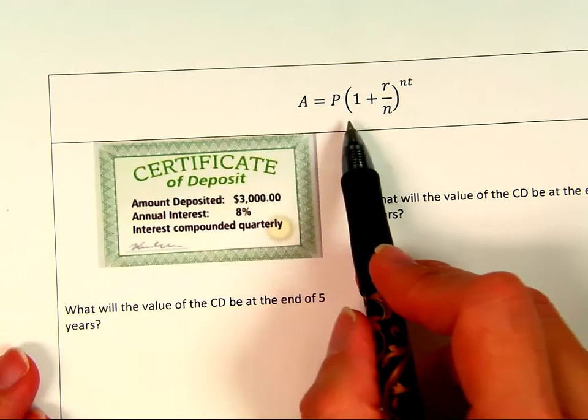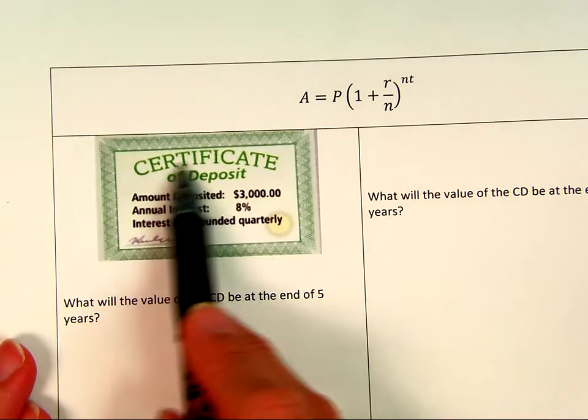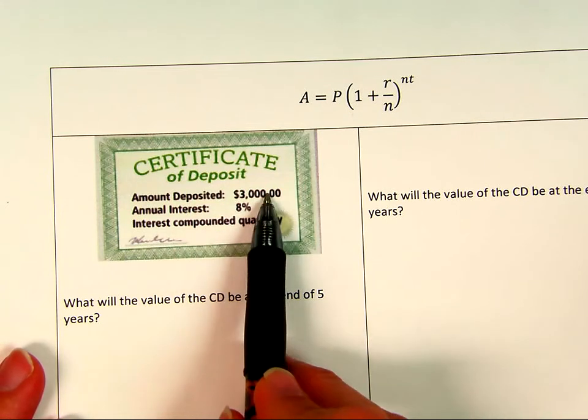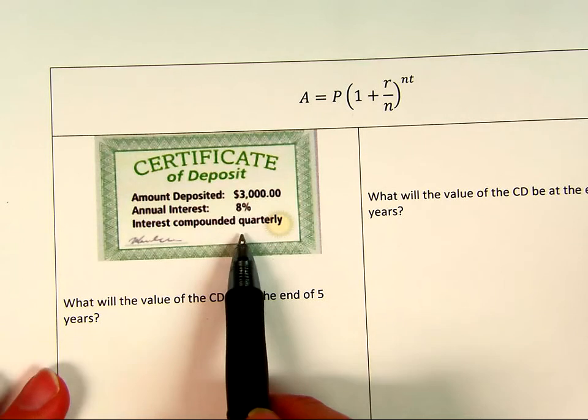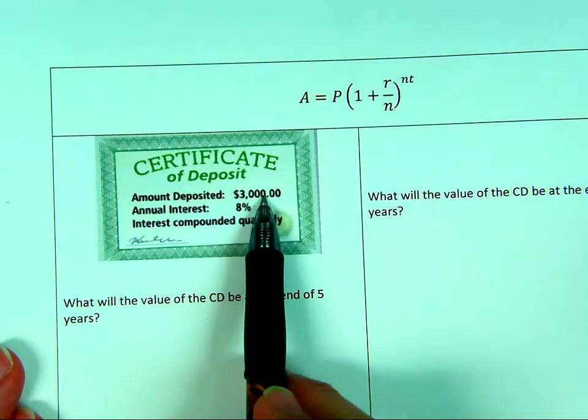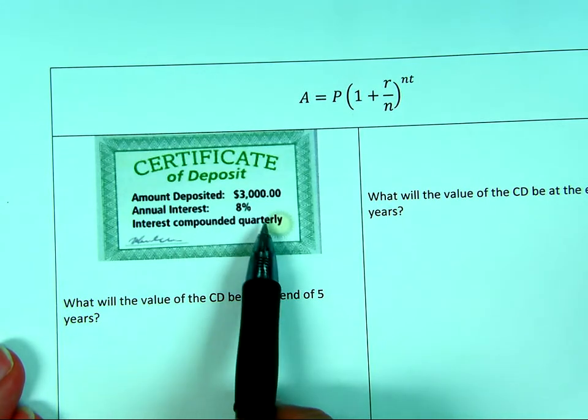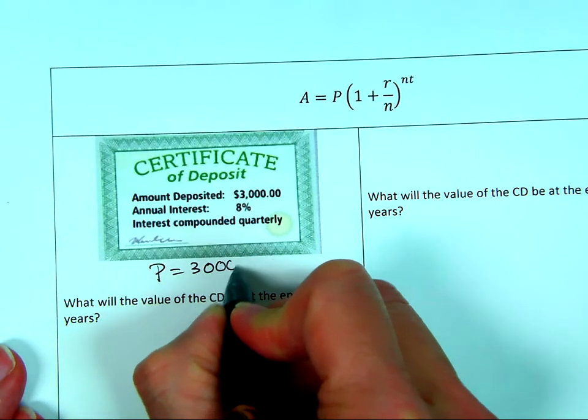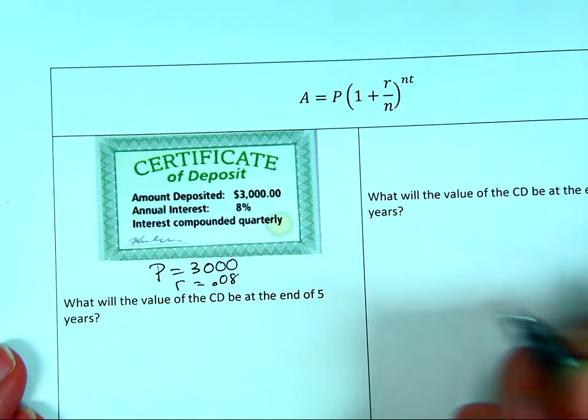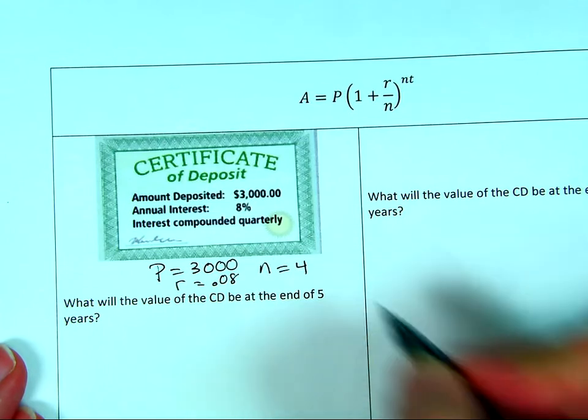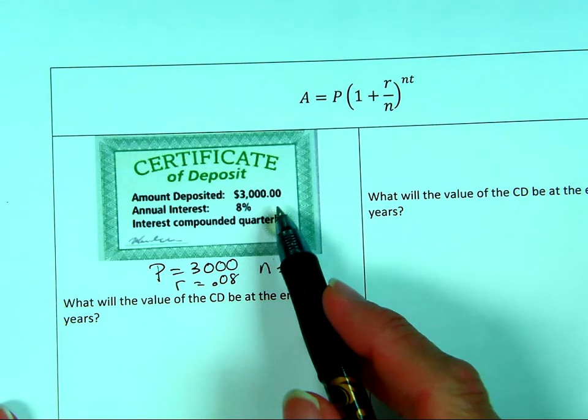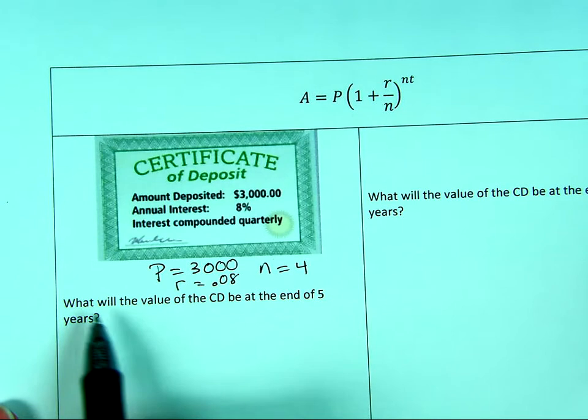Here is a certificate of deposit. For short, we call those CDs. I can go to a bank and purchase a CD, give them $3,000, they give me an interest rate, and I just leave it there for a certain number of years. We're going to initially invest $3,000 at 8% interest and compound it quarterly, which means four times a year. What do we know from this? Our principal is $3,000, our rate is 0.08, our n is four because quarterly means four times a year. What will the value of the CD be at the end of five years?